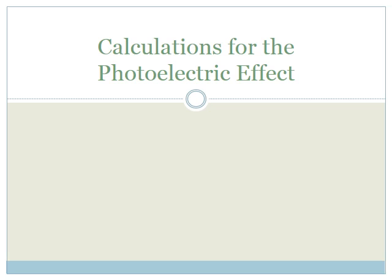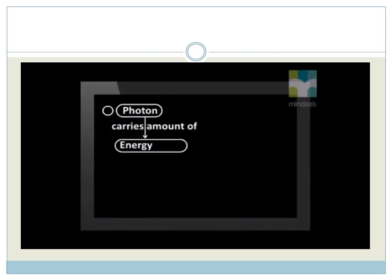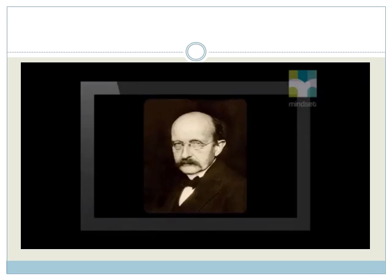Please watch the video carefully. Remember that Einstein proposed a revolutionary idea that light consists of particles called photons. Each photon carries a certain amount of energy determined by its frequency. This fits with work by another scientist, Max Planck, who proposed quantum theory.